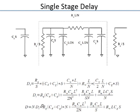To minimize total delay, differentiate with respect to size s and set equal to zero. The two terms independent of size drop out, leaving the familiar form 1/x + x, which is minimized when both terms are equal. The term Rg(CD + CG) is essentially a parasitic quantity where the size cancels — increasing size increases both the parasitic and the load proportionally.